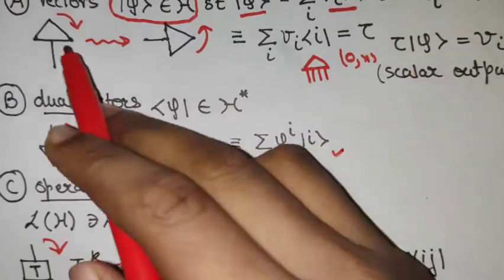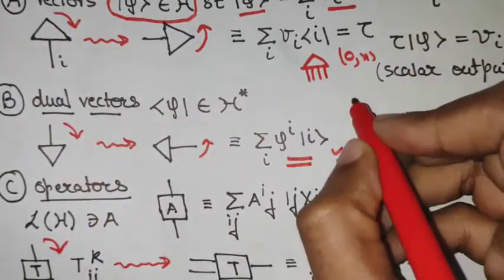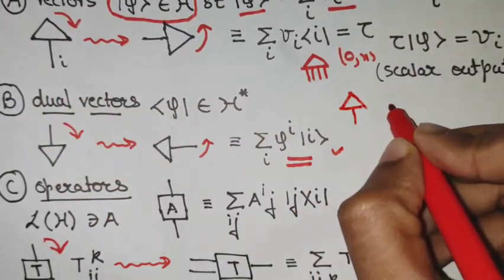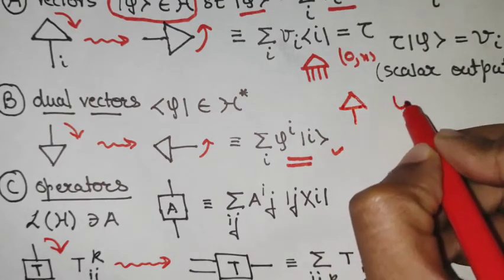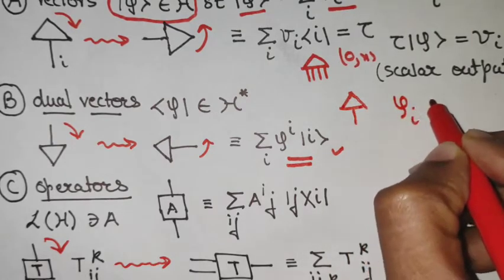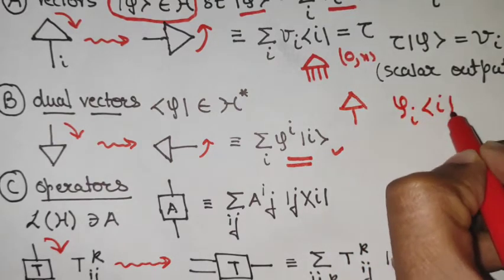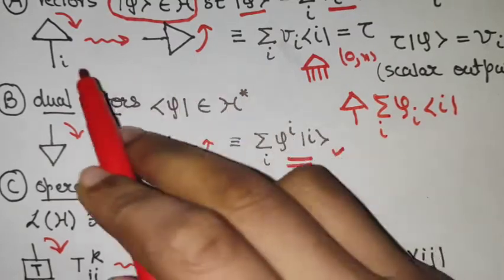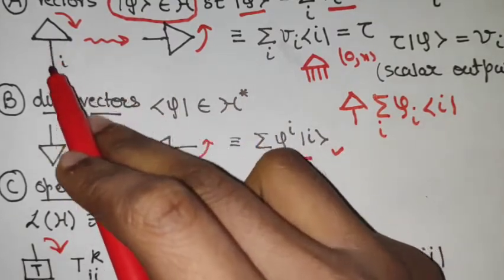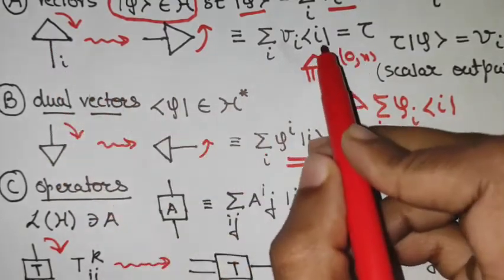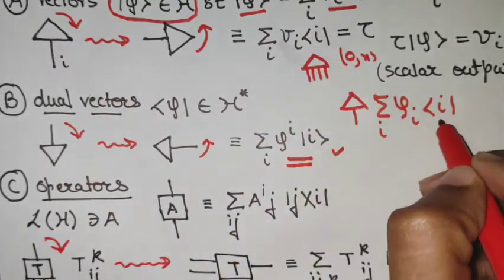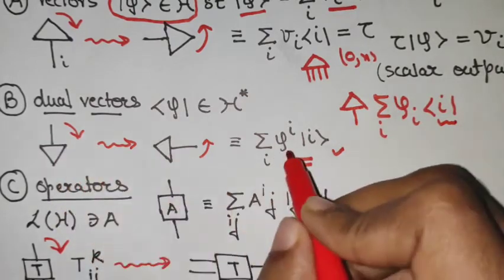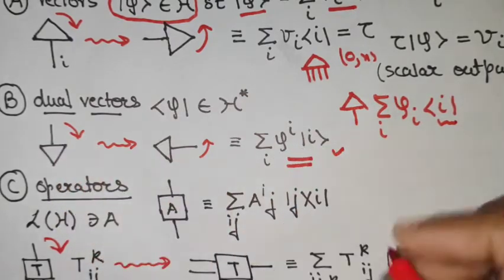The description in the computational basis for a particular object is given by ψ_i. Whenever there is an arrow coming out from the bottom, that arrow goes with a summation over a bra, and an arrow from the top goes with a summation over a ket.